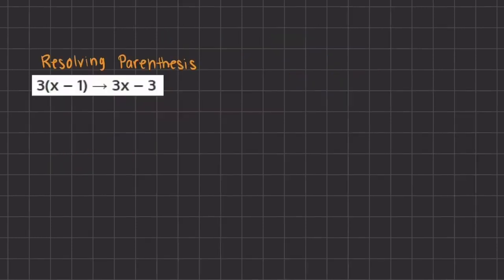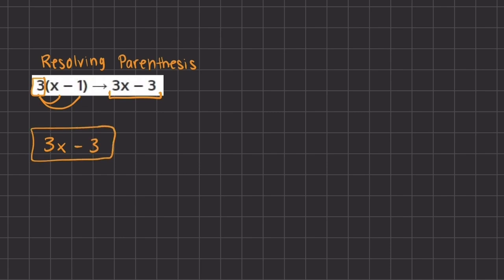Our next simplification method is resolving parentheses. When we resolve parentheses, we take the coefficients that are outside of the parentheses and distribute them inside. If we distribute this 3 into our parentheses, we have 3 times x, which gives us 3x, and 3 times negative 1, which gives us negative 3. So 3x minus 3 is the resolved parentheses, or simplified, version of this expression.